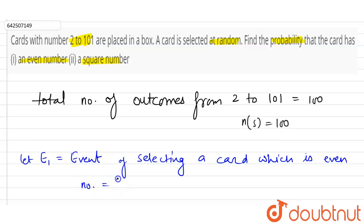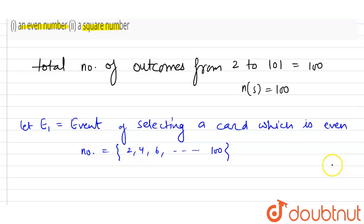It cannot be 101. Now we have to find the number of terms lies between 2 to 100, which is even. So here we use the formula of arithmetic progression because 2, 4, 6, all these are in AP.